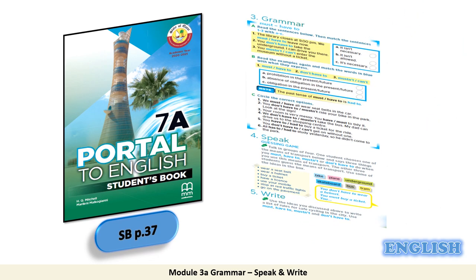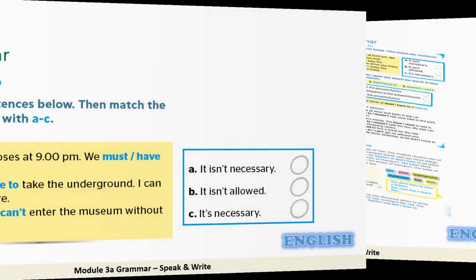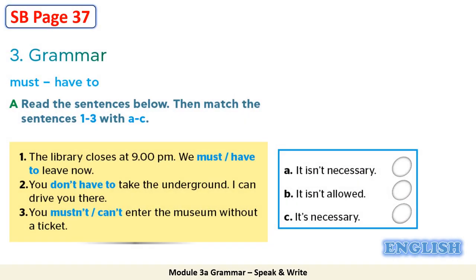Now open your student book on page 37. In your student's book page 37, go to part 3, Grammar: must, have to. Read the given instructions for task A: Read the sentences below, then match the sentences 1 to 3 with A to C.